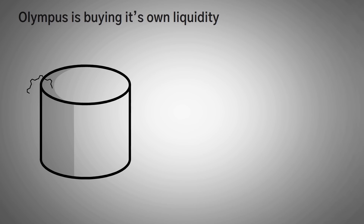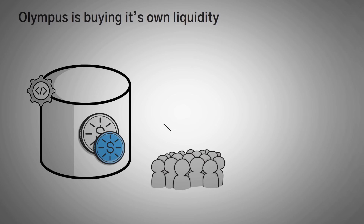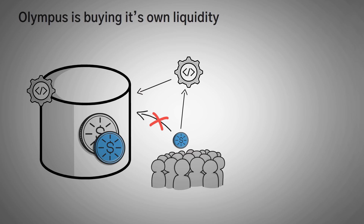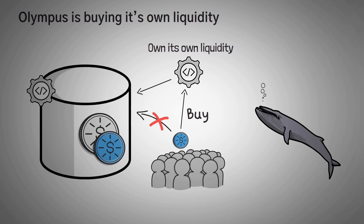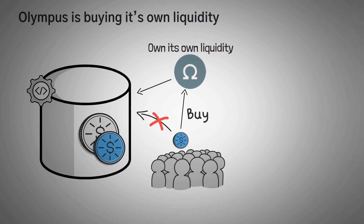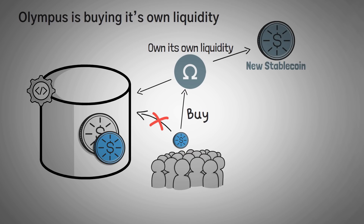The solution is that instead of having users provide their liquidity and taking on these risks, the protocol itself actually provides liquidity, or at least buys the liquidity back from the users. To put it simply, a protocol can own its own liquidity. This way, a whale can't sell out their portion of a liquidity pool and cause the price to become volatile. And in the case of Olympus DAO, a new version of a stablecoin that's actually backed by a protocol's own funds is created.